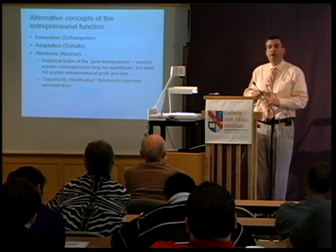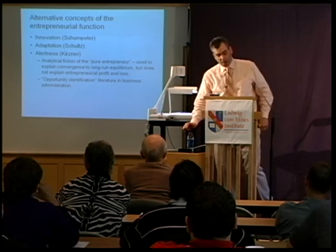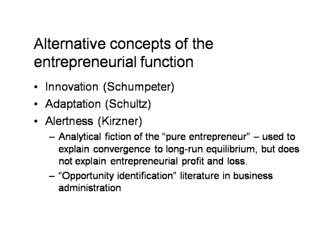Within the economics literature, the entrepreneurial function has been described in ways that differ from what I've just laid out. A very famous formulation from Joseph Schumpeter — first in his 1911 book on the theory of economic development — described the entrepreneur as a kind of innovator: entrepreneurship is the act of introducing new goods and services, new production technologies, new combinations of resources that no one had previously thought of. Innovation is clearly an important aspect of economic performance, but the function of the innovator is distinct from the function of the entrepreneur as laid out in causal realist analysis.